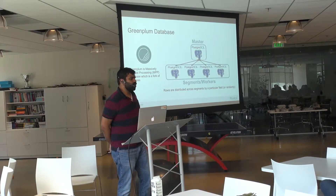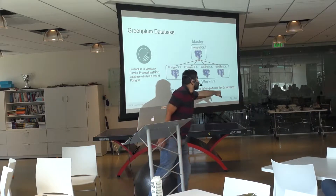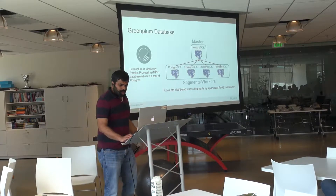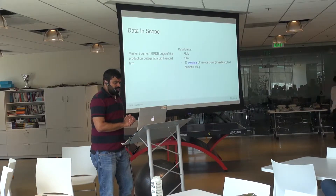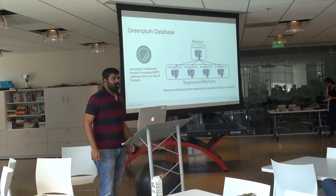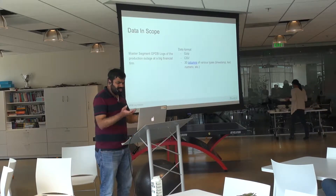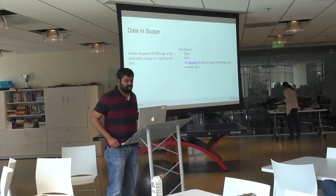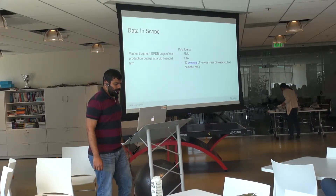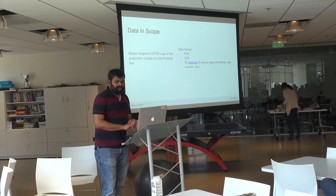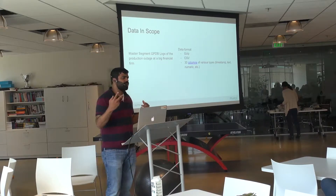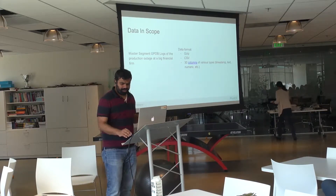If you know what you want to join on, you can distribute that way. If you don't know, you can distribute randomly and get the best parallelization. The master node also has some orchestration logic to handle this. In this project, we worked with just the master segment logs and had about 30 columns — enough data but not huge data. Because it was just a two-week POC, we worked with limited data.